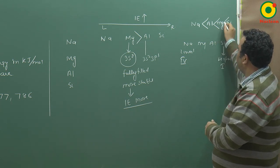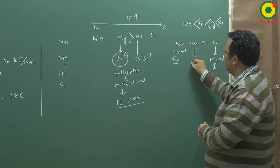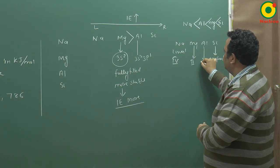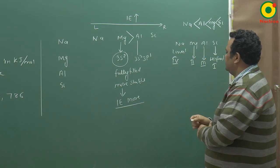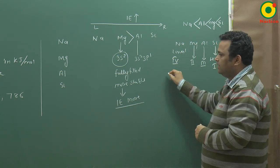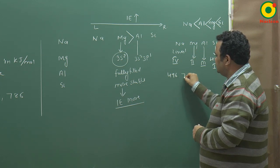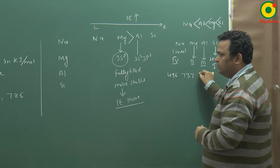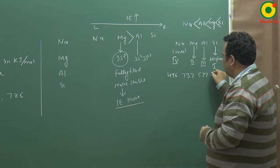This is the first number. It'll be second number there, and this third number. The values are 496, 738, 577, 786.